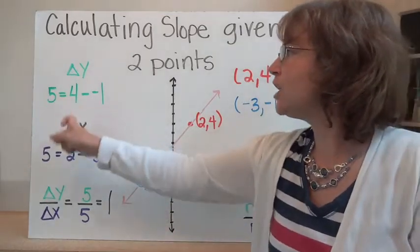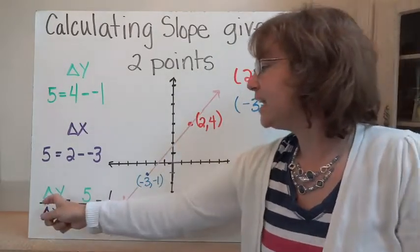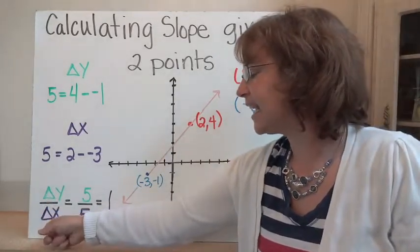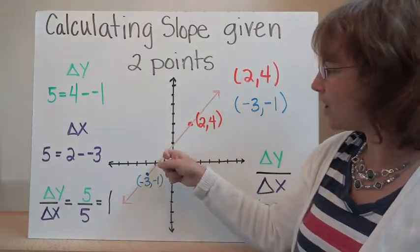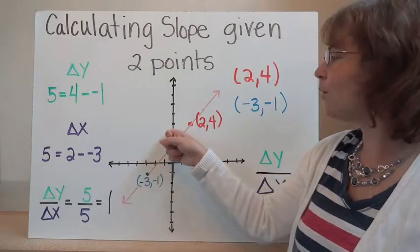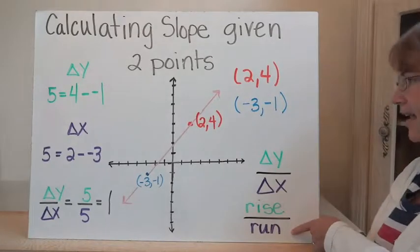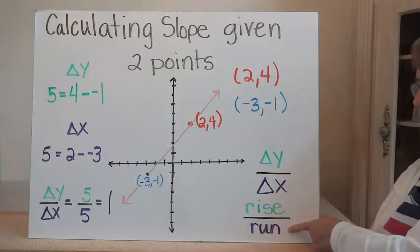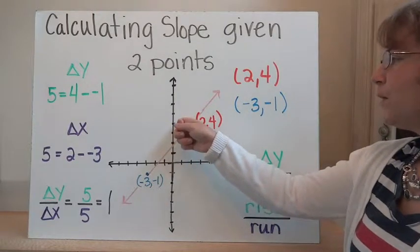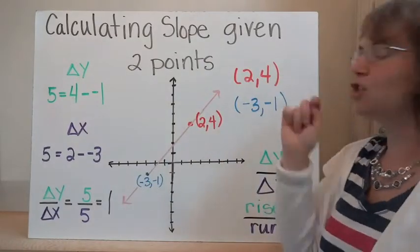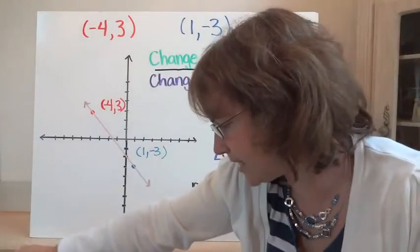So our change in y over our change in x gives us how steep the line is. Change in y is five, change in x is five, so the slope — delta y over delta x — is five over five, which is one. That means for every one I go up, I go over one. This is also called rise over run: rise one, run one. So our slope between these two points is one, and the slope stays the same all along that line.